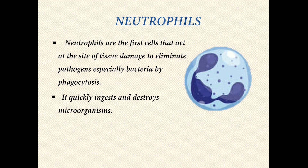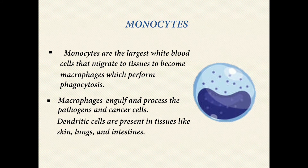Neutrophils are the first cells that act at the site of tissue damage to eliminate pathogens, especially bacteria, by phagocytosis; they quickly ingest and destroy microorganisms. Monocytes are the largest white blood cells and migrate to tissues to become macrophages, which perform phagocytosis. Macrophages engulf and process pathogens and cancer cells, and are involved in wound healing, tissue regeneration, and pro-inflammatory activities.